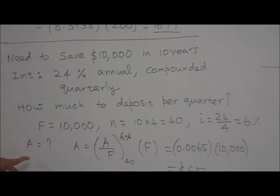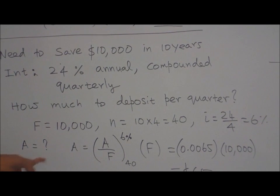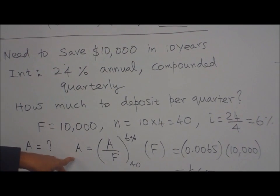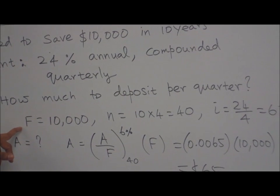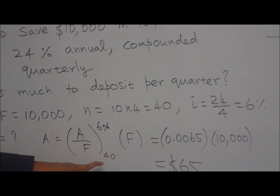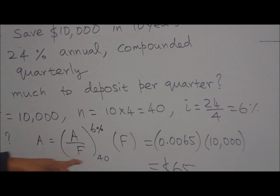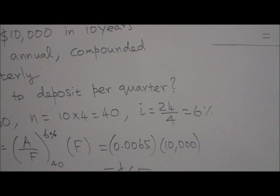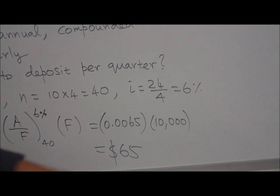So you need to find what is A. That is every quarter how much you have to invest. So A equal to A by F times F. Because what is given to us? F is given. So A by F times F. So for N equal to forty. I equal to six percent. Look in the table. You get .0065 for A by F. Times F is given ten thousand. That gives you sixty-five dollars.